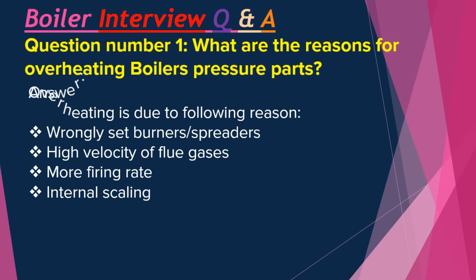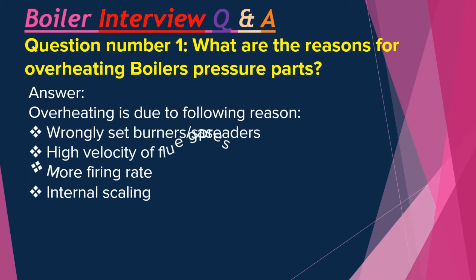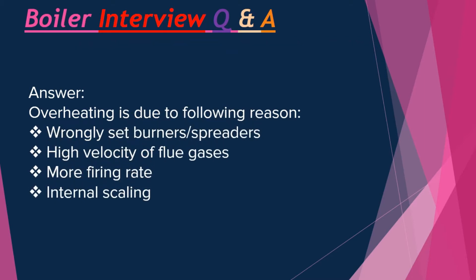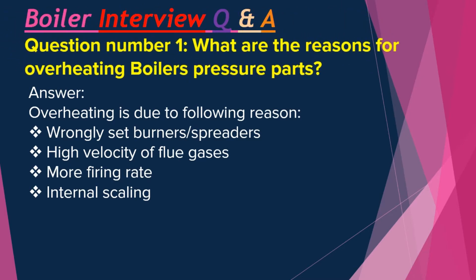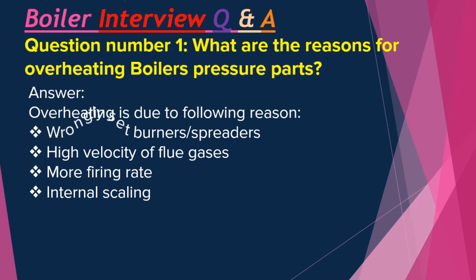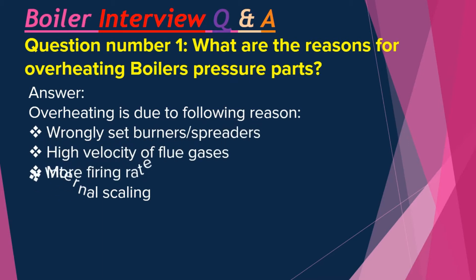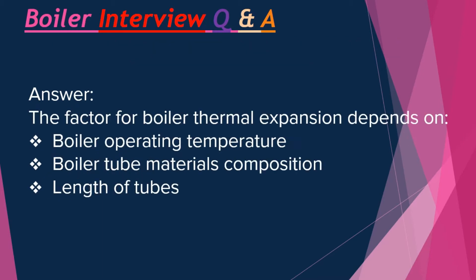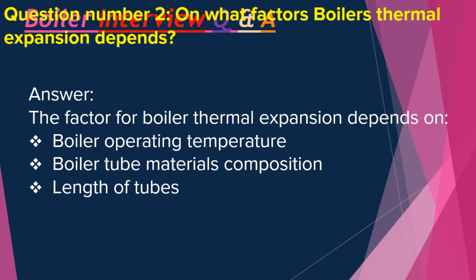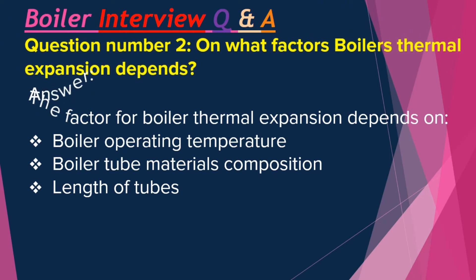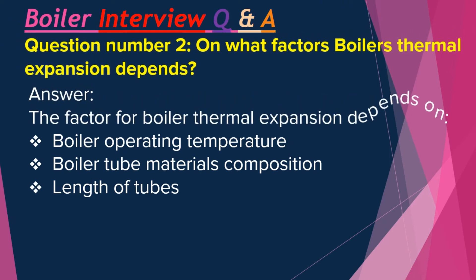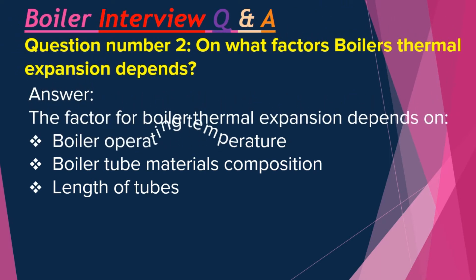Question number one: What are the reasons for overheating boiler pressure parts? Answer: Overheating is due to the following reasons — wrongly set burners or spreaders, high velocity of flue gases, more firing rate, and internal scaling.